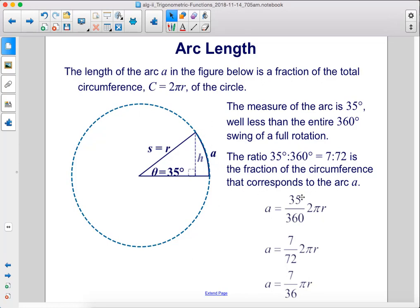So a equals 35 over 360 times 2 pi r. 35 over 360 simplifies to 7 over 72, so a equals 7 over 36 pi r once you simplify further.